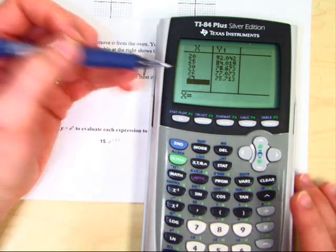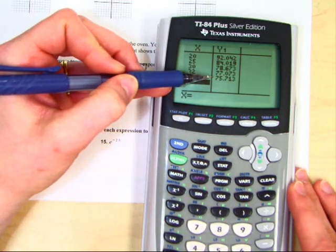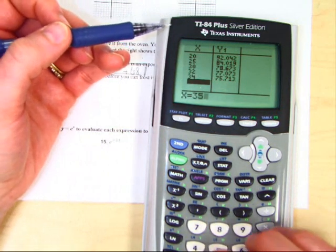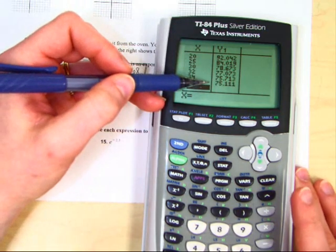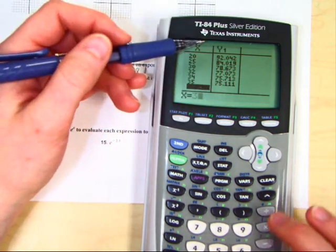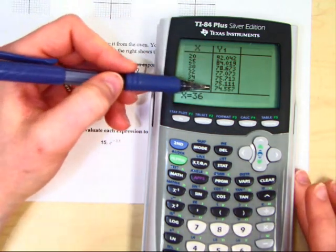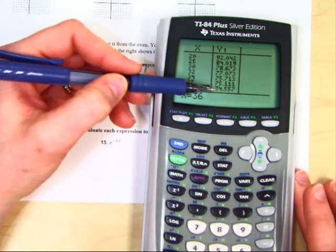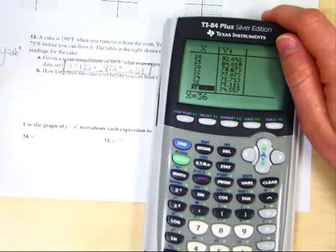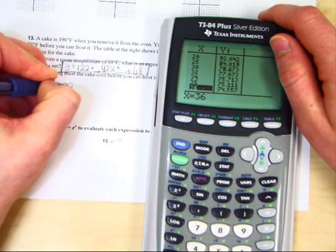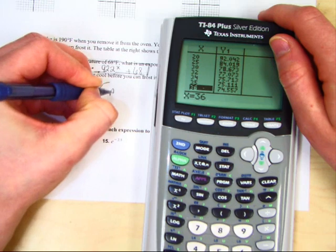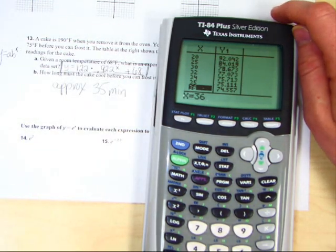Let's try 34. At 34, we're almost there. Your cake is at 75.7 degrees. Let's try 35. At 35, we get 75.1 degrees. Let's try 36. At 36, the cake has passed the point that we need, so we're able to answer our question. How long should the cake sit out? Approximately 35 minutes. And then the cake will be ready to frost.